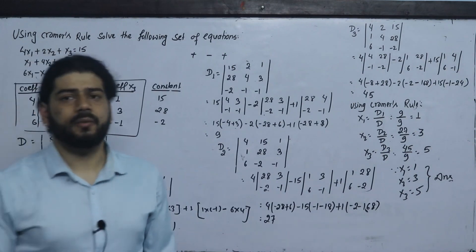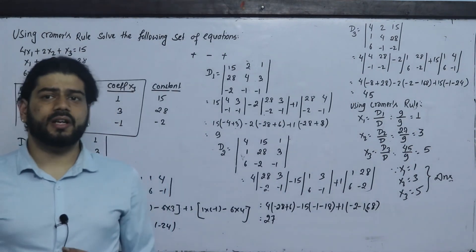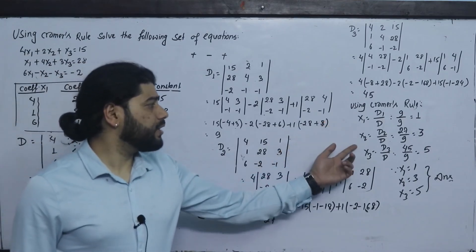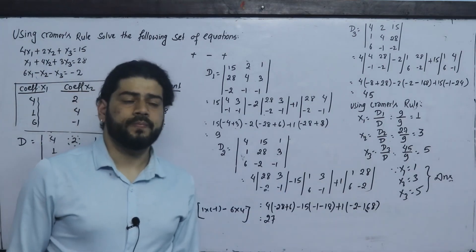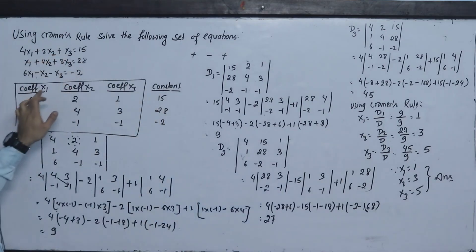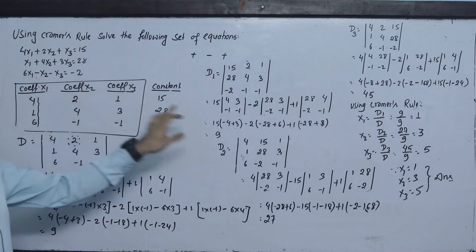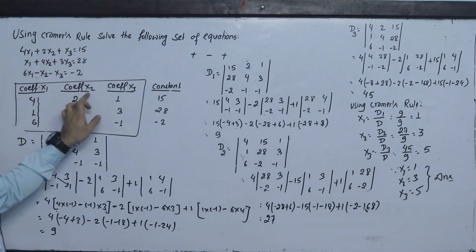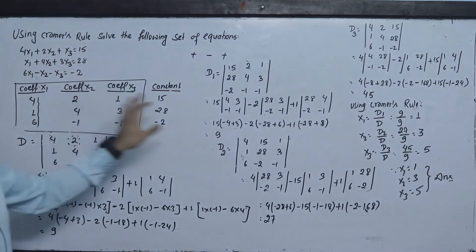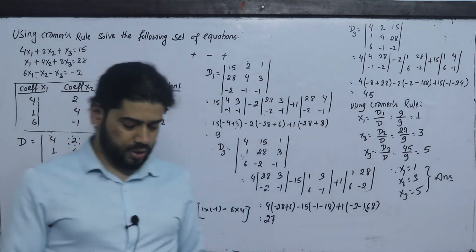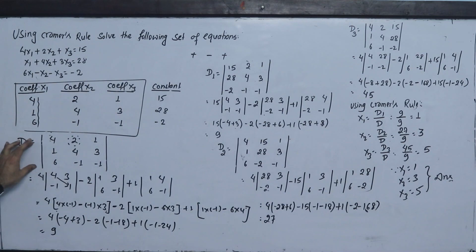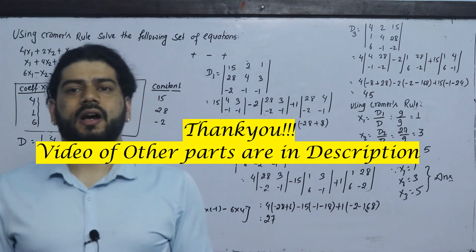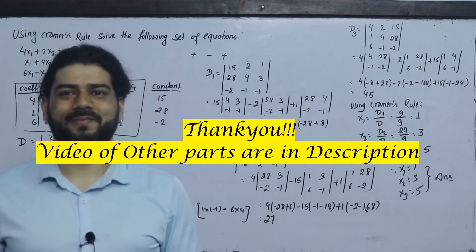To summarize Cramer's rule: the variables x1, x2, x3 — or x, y, z — or a, b, c — are found by x1 equals D1 upon D, x2 equals D2 upon D, and x3 equals D3 upon D. The same method applies for any set of variable names such as p, q, r.